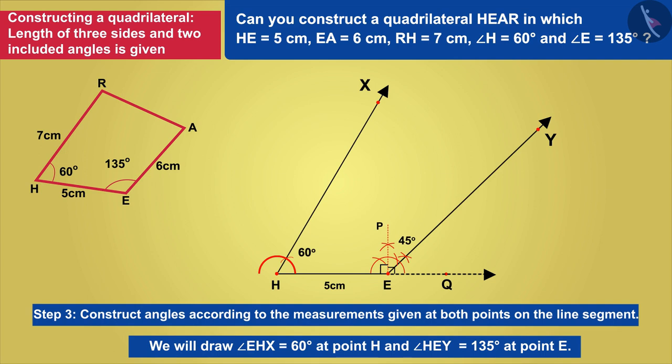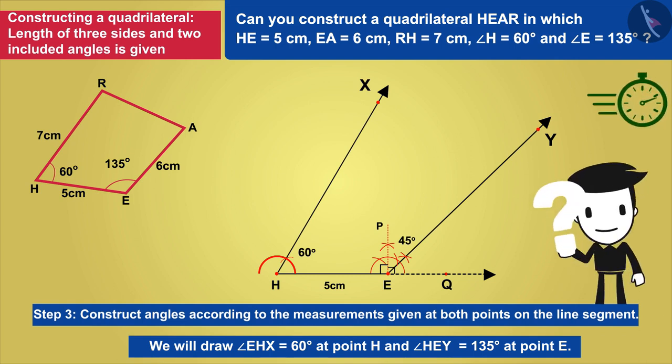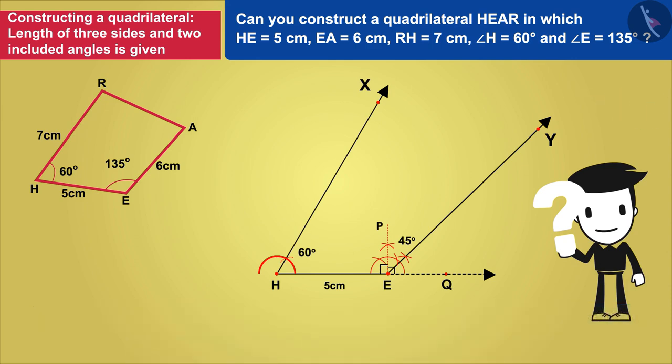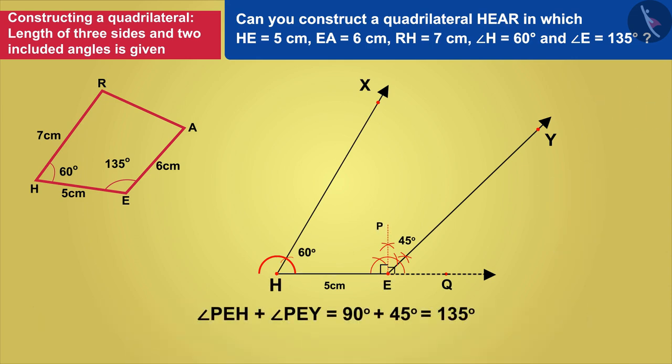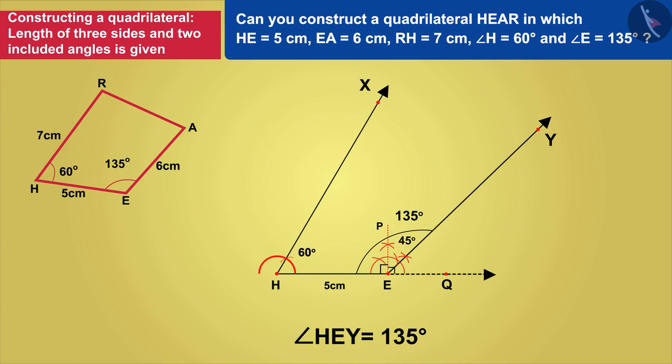Can you tell us how we will get an angle of 135 degrees? Alright, angle PEH plus angle PEY equals 135 degrees, which gives us 135 degrees of angle HEY.